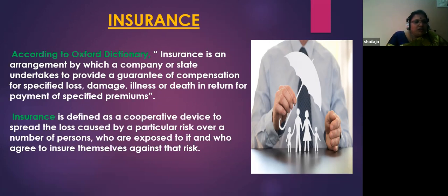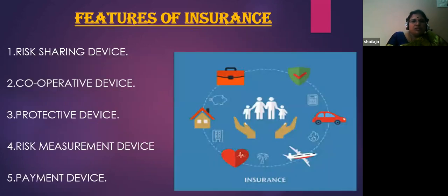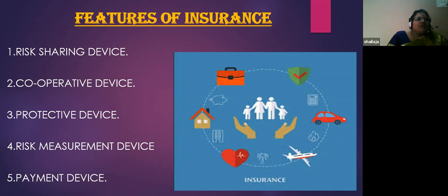Another definition: insurance is a contract whereby for specified consideration — here the premium — one party, the insurer (the insurance company), undertakes to compensate the other party, the insured (the person getting his property or life insured), for a loss relating to a particular subject as a result of the occurrence of designated hazards. From these definitions, insurance has five features: risk sharing device, cooperative device, protective device, risk measurement device, and payment device.